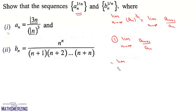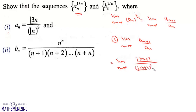Now, the limit as n tends to infinity — what is a_(n+1)? a_(n+1) will be factorial(3n+3) upon factorial(n+1) cubed, divided by a_n, and a_n is factorial(3n) upon factorial(n) cubed.